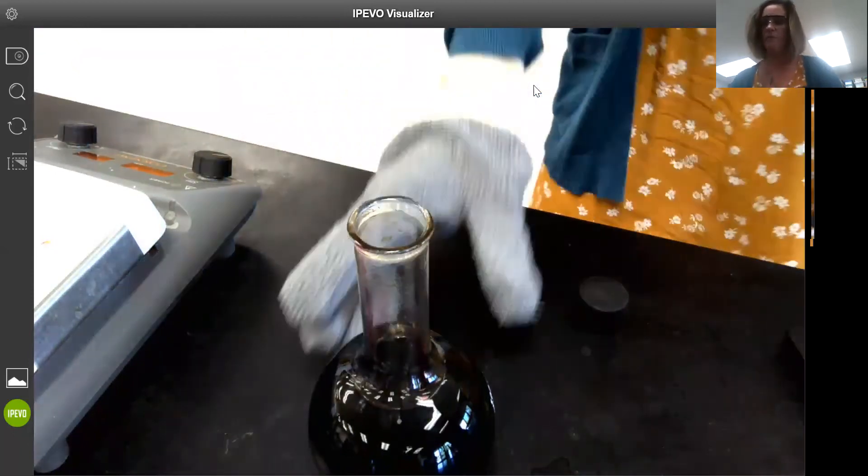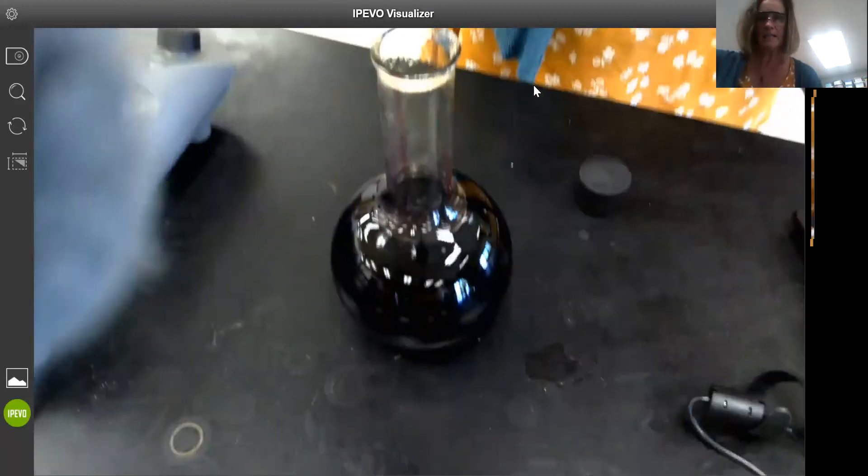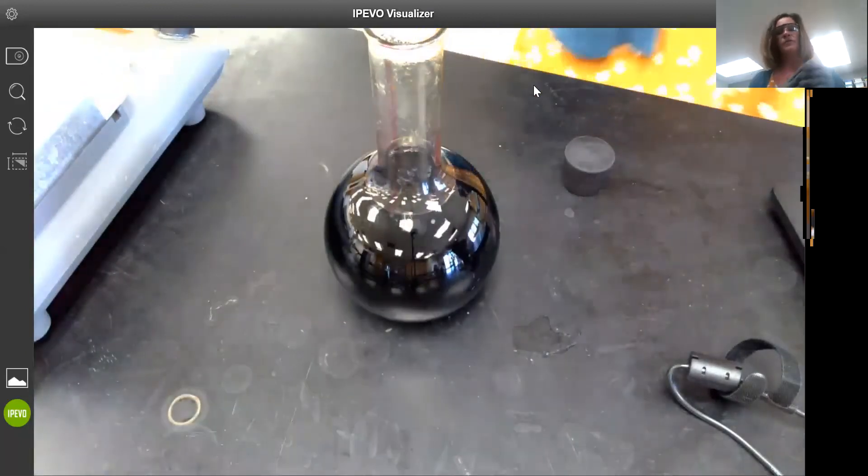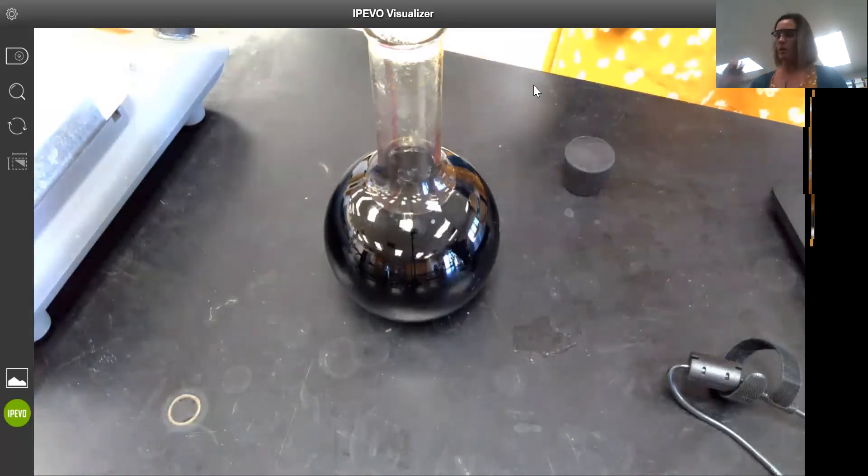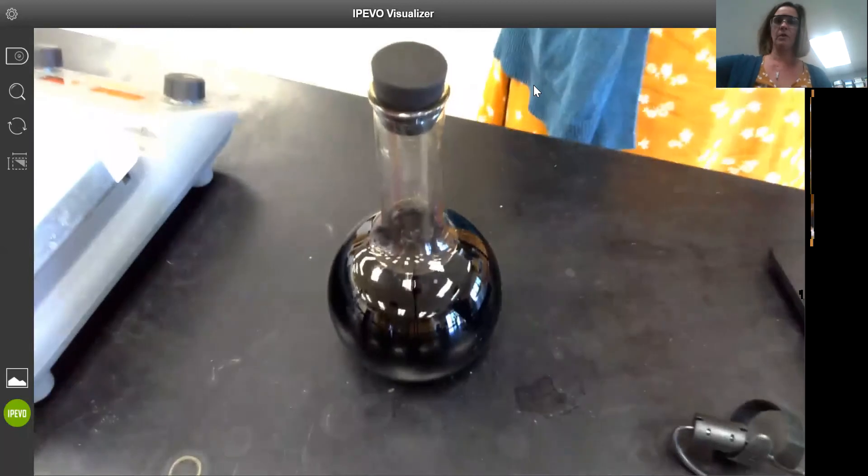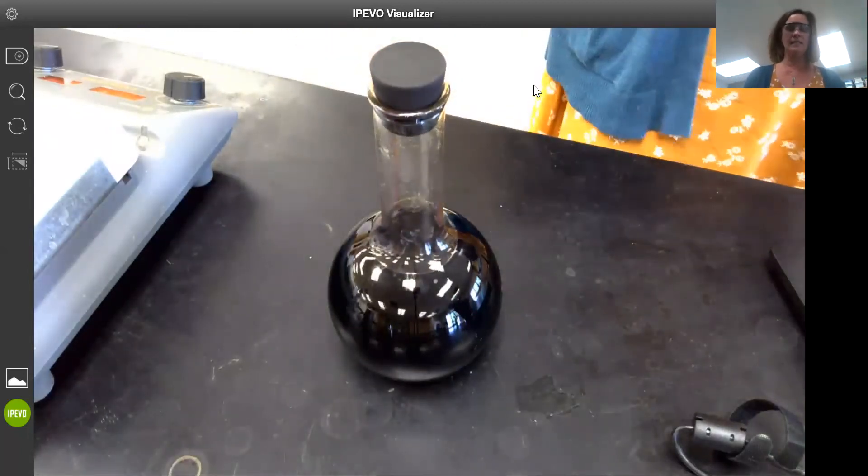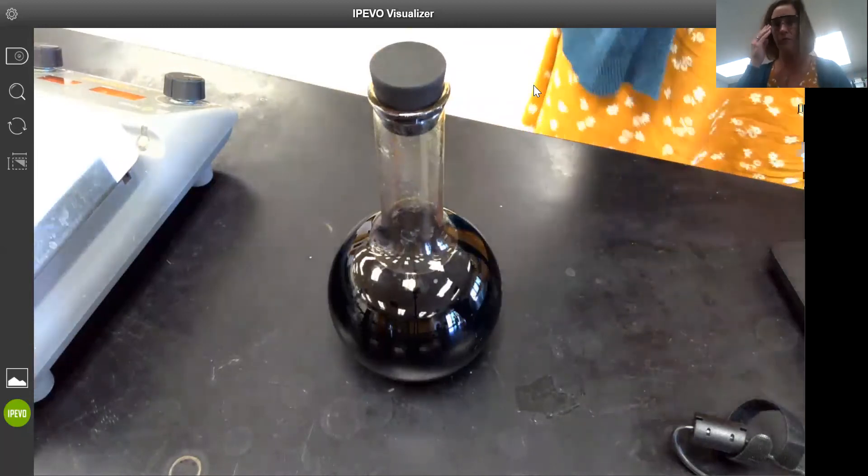Now this solution that we've made here in this step is light sensitive, and so for storage purposes we're going to put a stopper in it. Once it cools down I'll put a rubber stopper in and then I will wrap the entire flask in aluminum foil for storage.